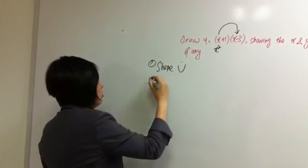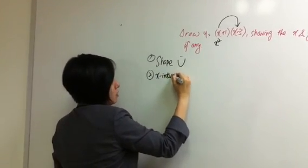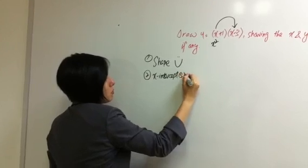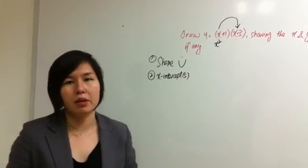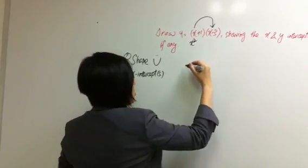Now, the second thing that we need to find will be our x-intercepts. How do we find our x-intercepts? You set the value of y to be 0. So this is what I'm going to be doing.